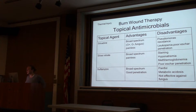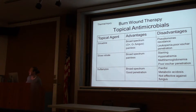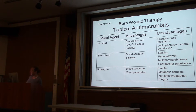Some common topical agents: Silvadene is the most common. It's advantageous because it's broad spectrum — covering gram-positives, gram-negatives, and fungus — and it's painless. The disadvantage is resistance in Pseudomonas, which is the most common organism causing sepsis in burn patients. If the white blood cell count drops, it may be due to Silvadene — stop it and switch dressings. Silver nitrate is broad spectrum and painless but causes electrolyte abnormalities and has poor eschar penetration. Sulfamylon is rarely used today because it's painful, though it penetrates very well.